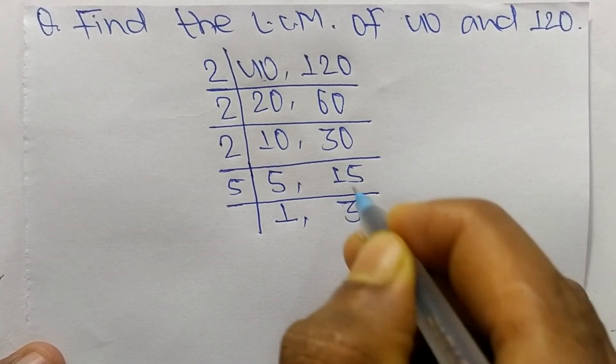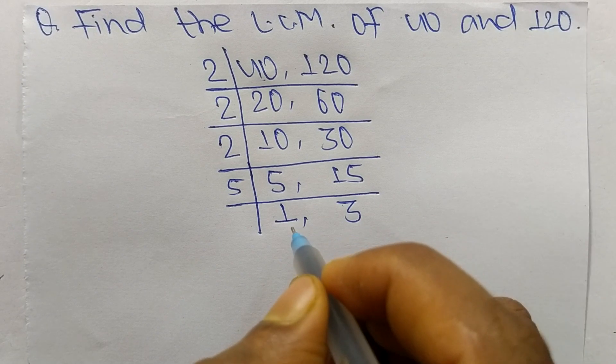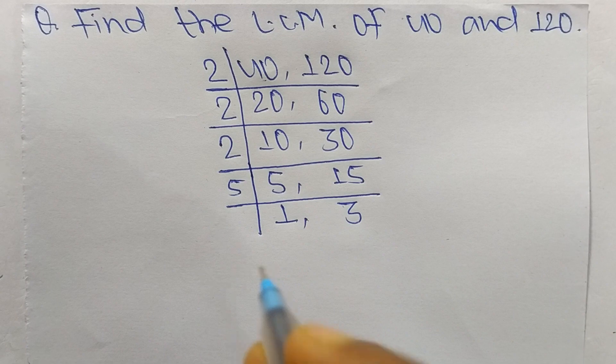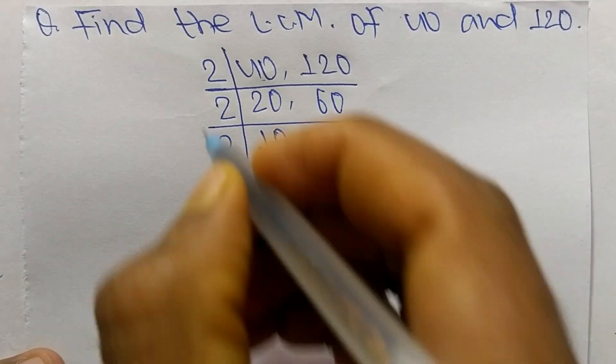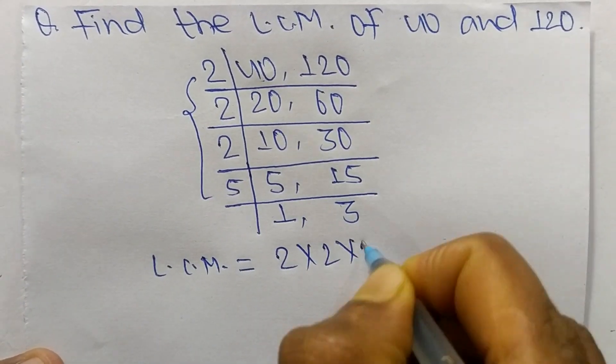At last we have 1 and 3 which is not exactly divisible by the same number. So its LCM is equal to, from this part it is 2 times 2 times 2 times 5.